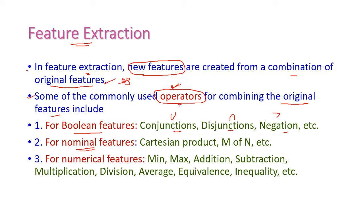The second one is Nominal Features. Nominal Features use operators such as Cartesian product, M of N, etc. M of N means from N number of features, we can select only M features. The third one is Numerical Features. Numerical Features means we can use numerical operations on the existing features — such as minimum, maximum, addition, subtraction, multiplication, division, average, equivalence, inequality, etc. These are some of the numerical operations performed on existing features so that we can create new features.